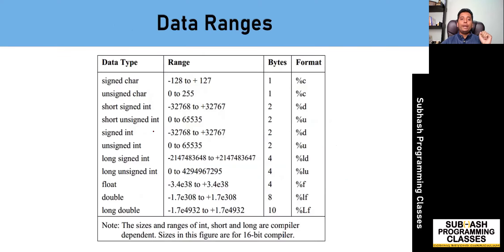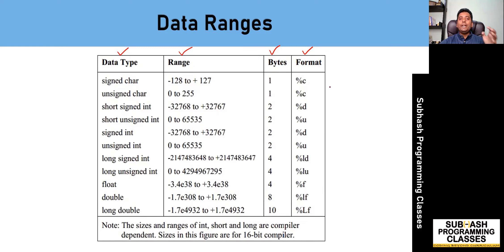In the next slide I've provided a table indicating the different range of values supported by different data types. The table has four columns: the first column indicates the data type, the second column shows the range of values, the third column shows the number of bytes allocated, and the fourth column indicates the format specifier. We won't worry about format specifiers for now, as that will be covered in a separate lesson on printf. Let's concentrate on the first three columns.